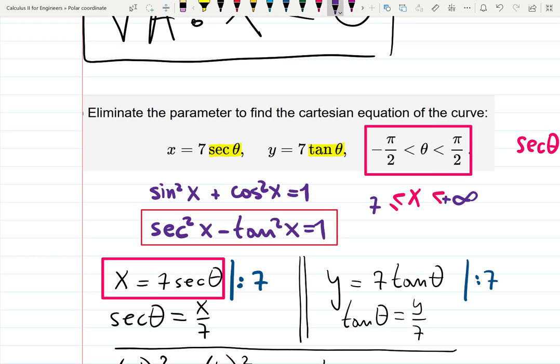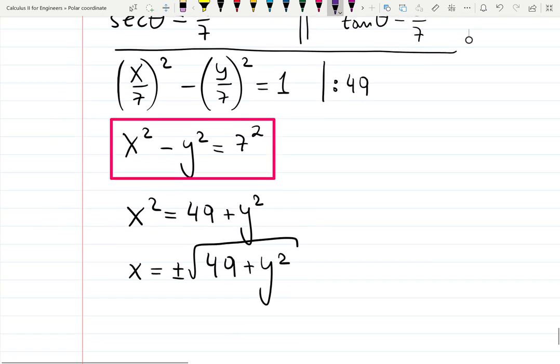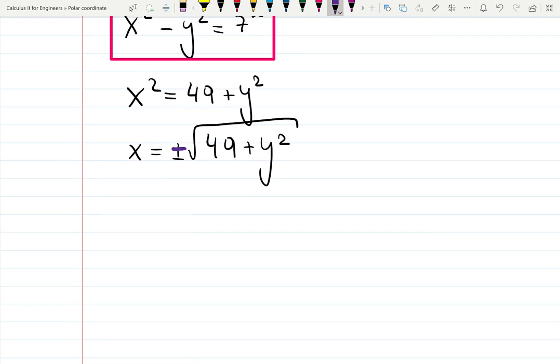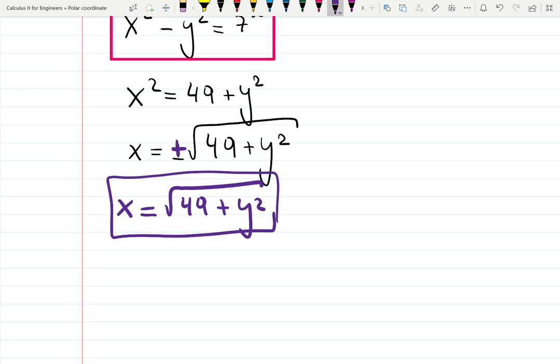That means x actually starts with 7 and goes to plus infinity. And we don't include plus infinity like this. So, x has a domain from 7 to plus infinity. That means x cannot be negative. Why I'm saying that? Because it means we only keep a positive solution here. x is a square root of 49 plus y squared. And that is the final answer. And we can say since the domain for x is to be greater or equal than 7.